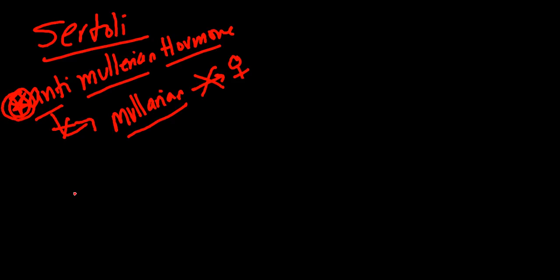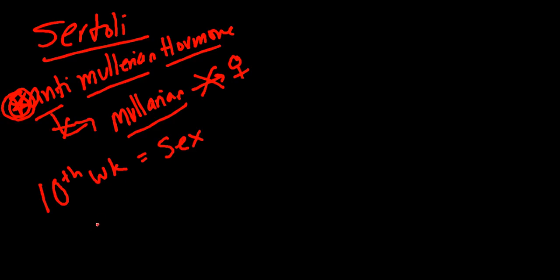Typically by the 10th week, sex is determined — your sex will already be determined in the growing fetus. Somewhere around the 8th week or so, you're going to get this anti-Müllerian hormone being produced, which will block the development of your Müllerian system — the female characteristics.